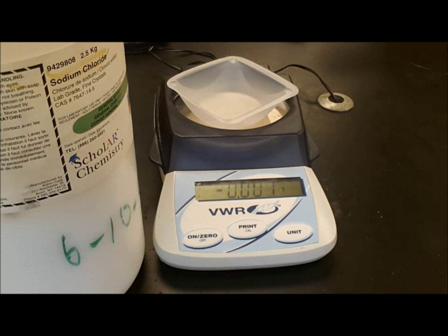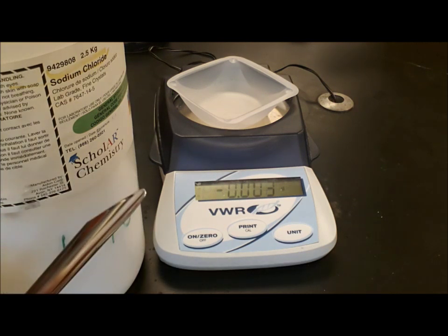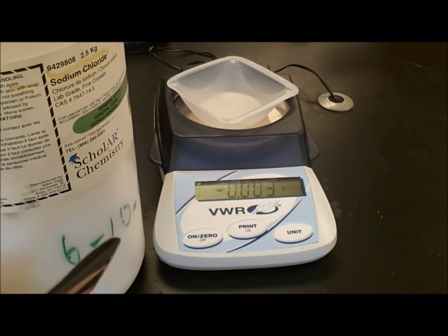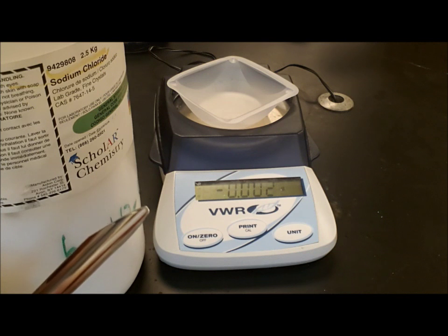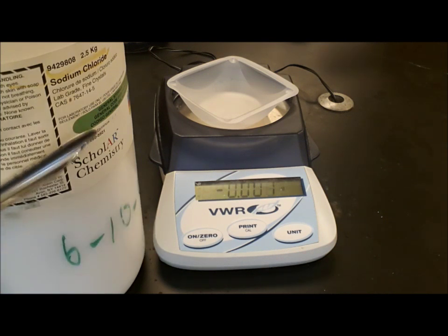Now the balance is not taking into consideration the mass of the weigh boat. Anything we add to this is going to be the mass of just the thing that we're adding. So the sodium chloride is in the bottle. Here is a spatula. We're going to use the spatula to measure out the sodium chloride. We want to use a clean spatula because if it's dirty, it's going to contaminate the pure sodium chloride currently in the bottle.